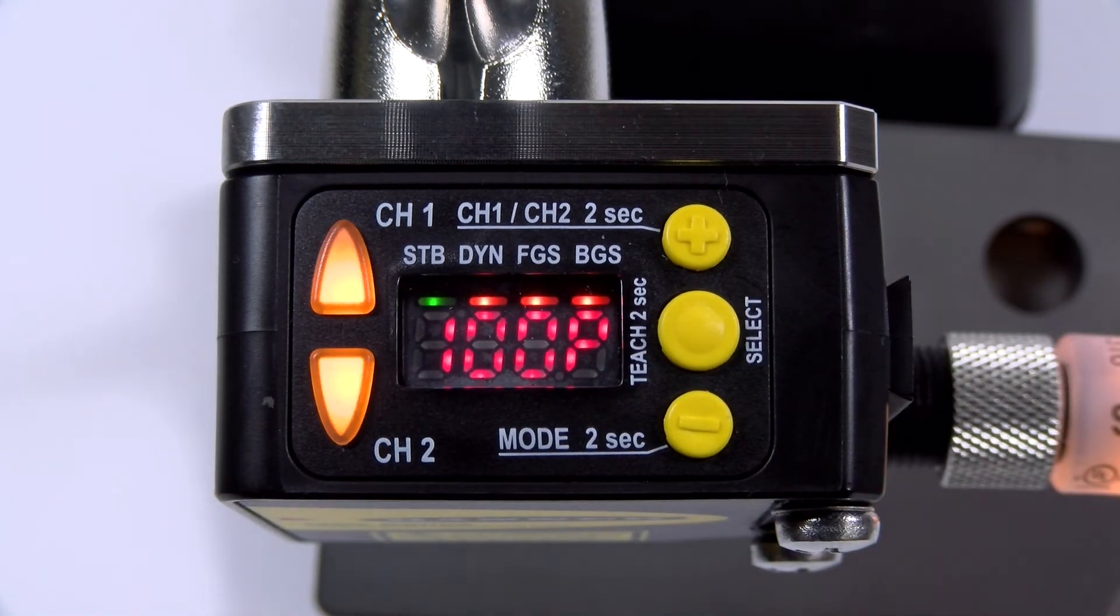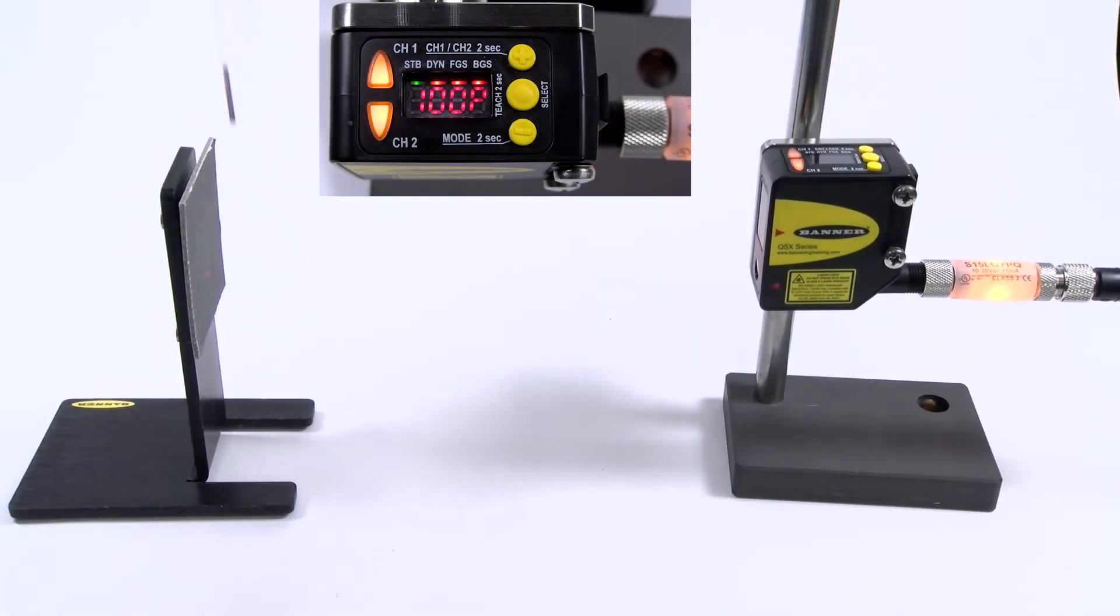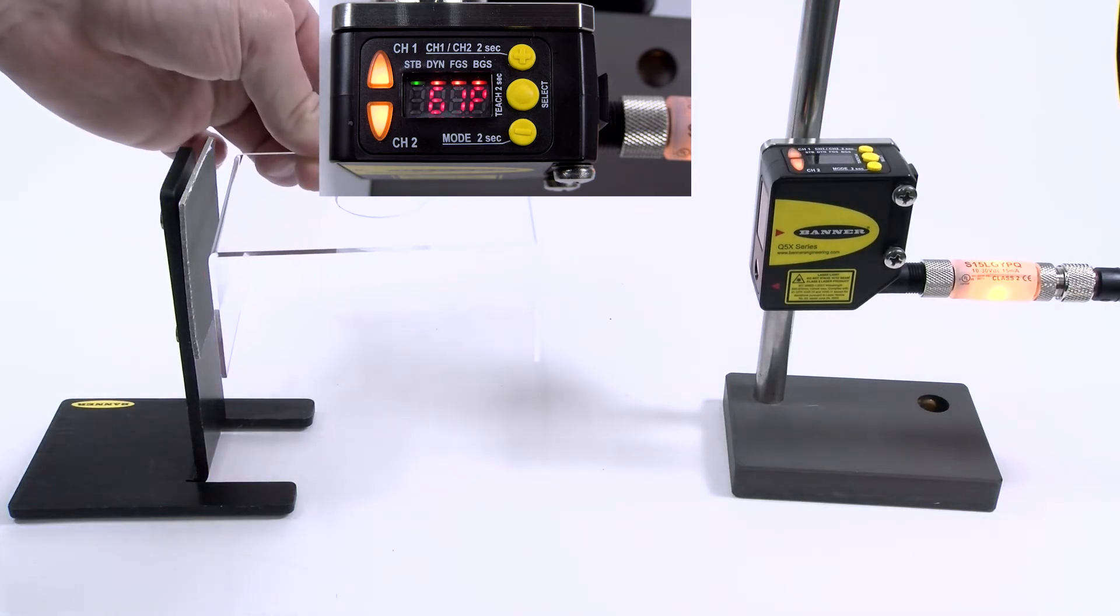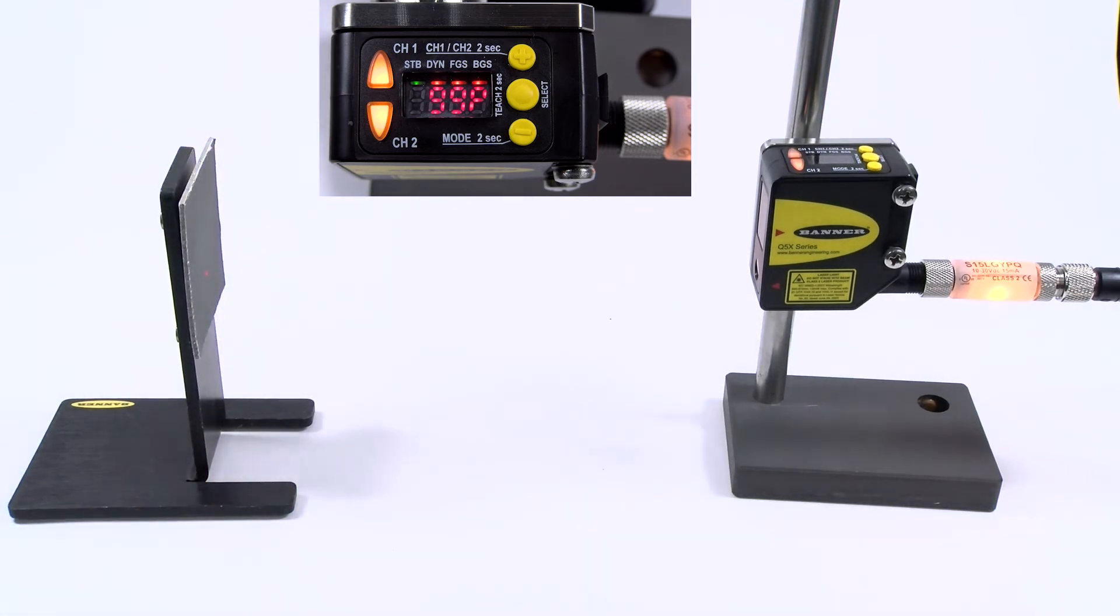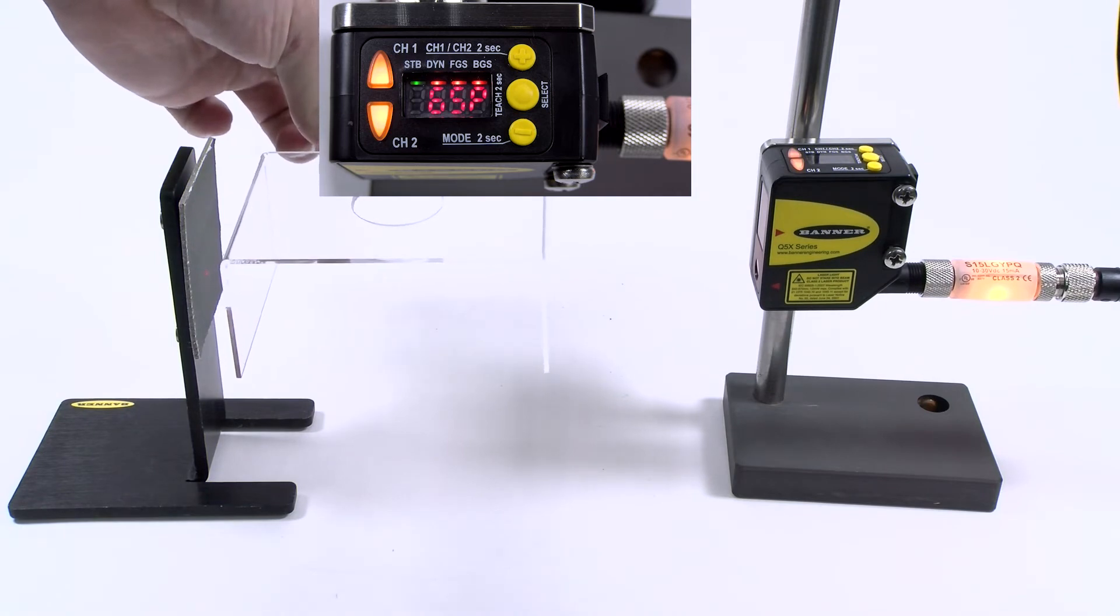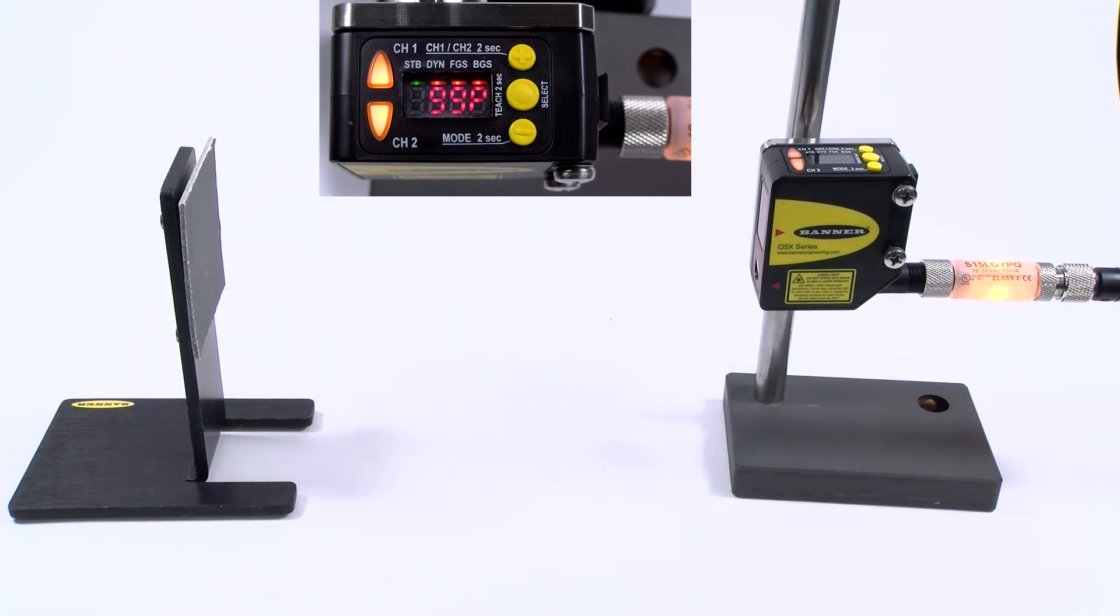50p will flash on the screen, then it'll return to run mode and 100p will be displayed. P stands for percentage, so 100p means the sensor sees something that is 100% the same as the taught condition. In this case, if a change is greater than 50%, the output will switch.